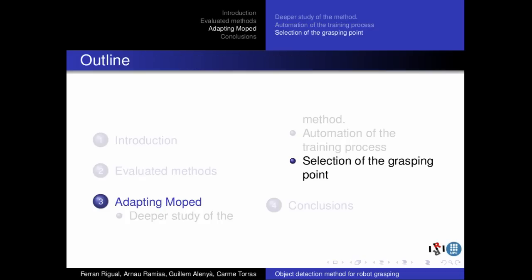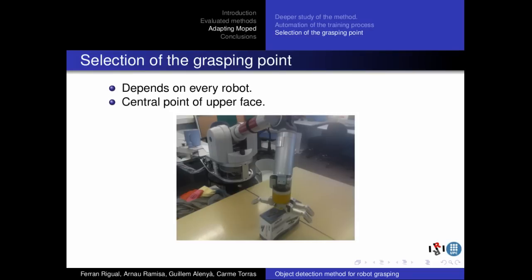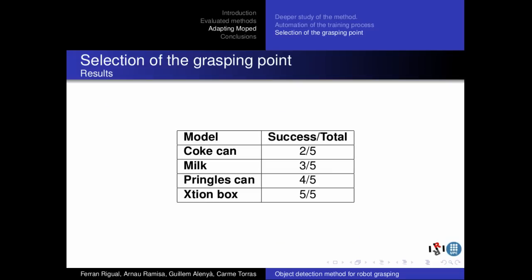The second adaptation is the selection of the grasping point. The grasping point is the one used by the robot to grasp the detected object. MOPET does not offer an algorithm to get one, because it depends on each robot. In this project, the intended grasping point is the central point of the upper face of the object, because on the tests this face of the objects is always clear. A table shows the results obtained when trying to grasp different kinds of objects. The results decrease as the objects are smaller, like in the case of the can of coke.